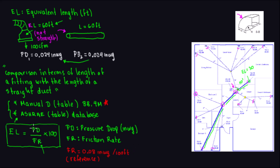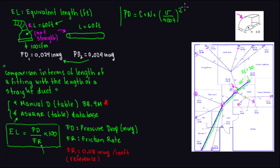Now, what is PD — the pressure drop? The formula for pressure drop is: PD = C × n × (V / 4007)², where C is the loss coefficient, n is the Reynolds number adjustment, and V is the velocity. That's the formula used to calculate pressure drop.